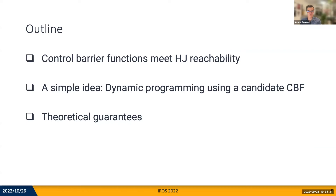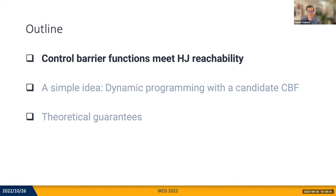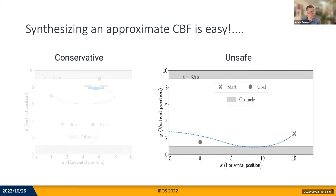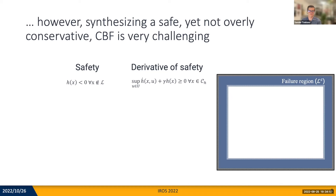Taking a step back, we will give some background on how CBFs and dynamic programming-based reachability are related, followed by some intuition of how our algorithm works with an example. As I said before, synthesizing an approximate CBF is easy, but often conservative or unsafe. However, synthesizing a safe yet not overly conservative CBF is very challenging.